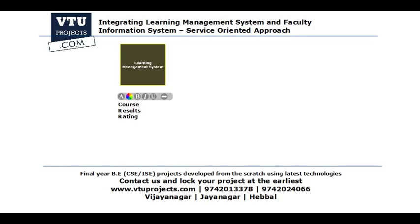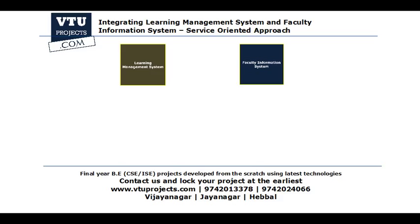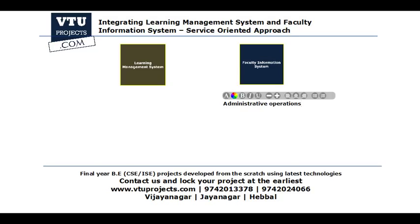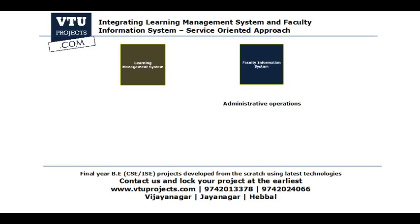On the other end, there is something called a Faculty Information System. It is also a software application, mostly concerned with administrative operations — for example, how many teaching faculties are there, which faculty is handling which course, what is the success rate of a faculty, how much they are being paid, and what is their feedback. All these things are implemented in a Faculty Information System, which is focused more on administrative operations.